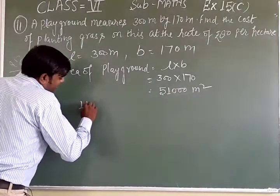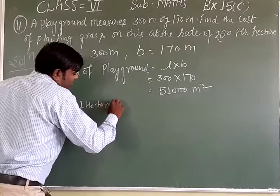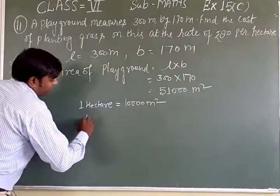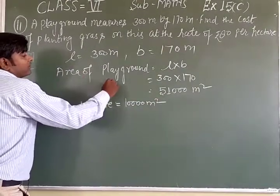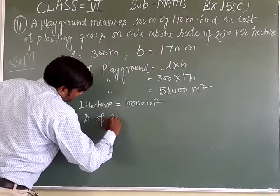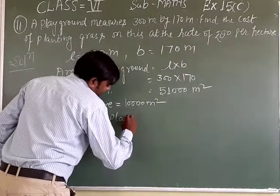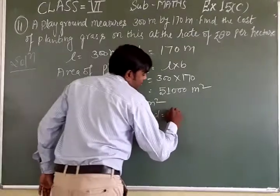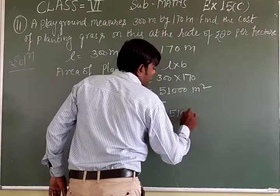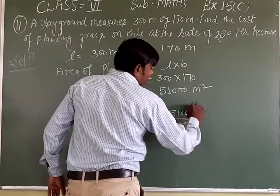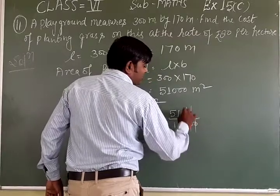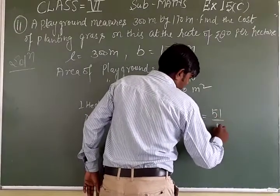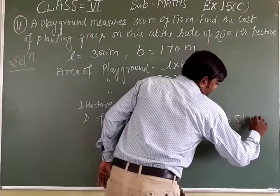Now, 1 hectare is equal to 10,000 meters square. So the area of the playground in hectares is equal to 51,000 upon 10,000, which equals 51 upon 10, that is 5.1 hectares.